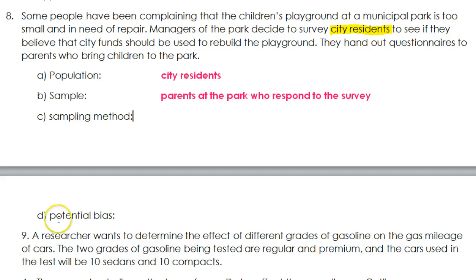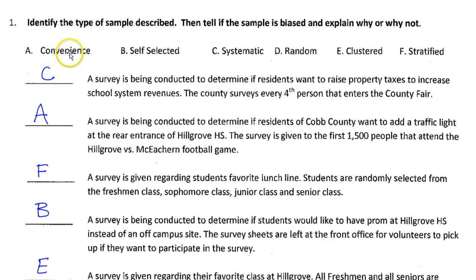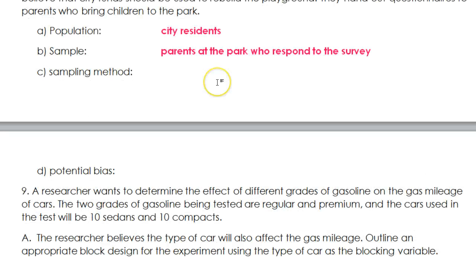What's the sampling method? There's no systematic thing happening — it's not every fifth person. There's nothing random happening, no groups being chosen, no categories where we're picking a few of each kind, so it's not stratified. I'm leaning towards convenience, because we're just handing out questionnaires at the park where we are. Or it could be self-selected, depending on whether people have the option of saying no — but I'm going to go with convenience.